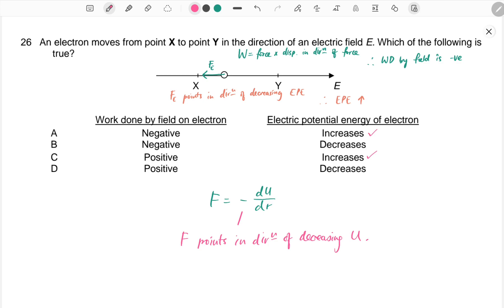What is the work done by the field? In other words, work done by the electric force. The electric force is to the left and the displacement is to the right, so the work done will be negative. Hence, the answer is A.